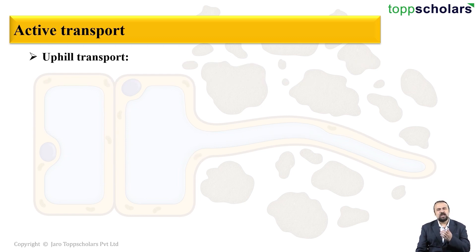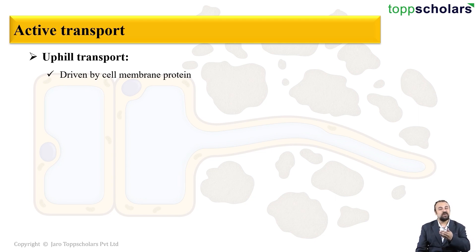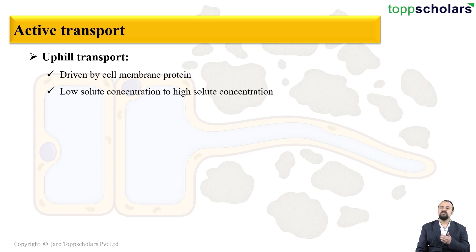These carrier proteins are also very sensitive to certain types of inhibitors. Active transport is also called uphill transport, because something is moving from low concentration to high concentration — it is like going uphill — and this is driven by the cell membrane carrier proteins.